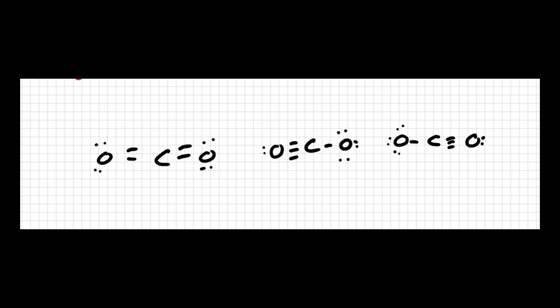Carbon dioxide tells a different story. The carbon again has four bonds and starts with four valence electrons, giving it a formal charge of zero. Each double-bonded oxygen has four unbonded electrons plus one electron from each part of the double bond — six total — so six minus six gives zero as well. We get zeros across the board for carbon dioxide with the double-bond structure. That's perfect: the less formal charge you have, the better.